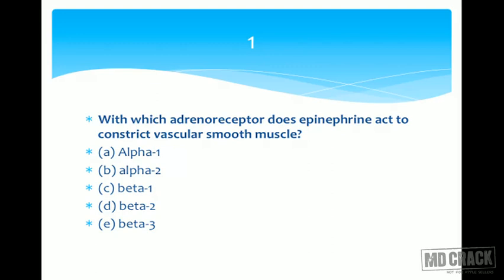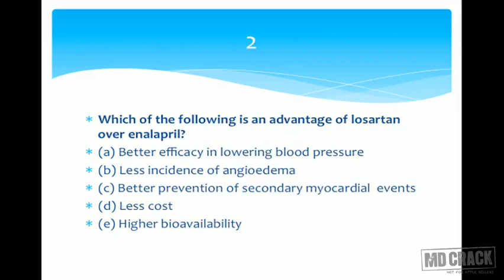We are now left with alpha-1 and alpha-2. Think about which receptor you hear about most commonly in the context of blood pressure and vasoconstriction. The answer is alpha-1 receptor. Epinephrine stimulates alpha-1 receptors, leading to vasoconstriction of peripheral vascular smooth muscle.